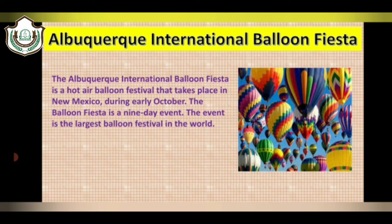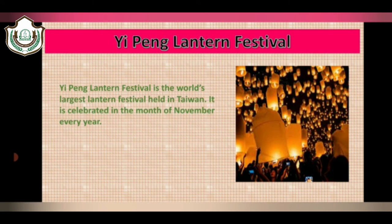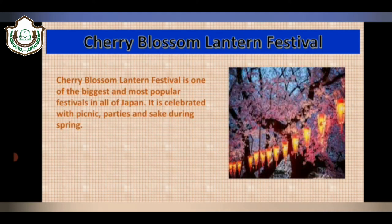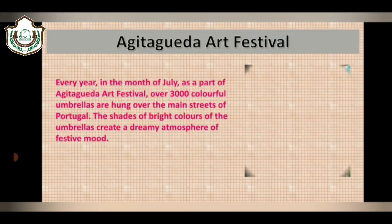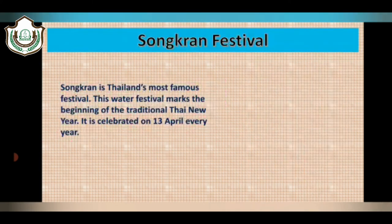Next is the Albuquerque International Balloon Fiesta. It is a hot air balloon festival that takes place in New Mexico during early October. The Balloon Fiesta is a nine-day event and is the largest balloon festival in the world. Then we have the Yipan Lantern Festival, which is the world's largest lantern festival held in Taiwan, celebrated in the month of November every year. Then we have the Cherry Blossom Festival, one of the biggest and most popular festivals in all of Japan, celebrated with picnics, parties and sake during spring. Then we have the Agitigut Art Festival. Every year in the month of July, over 3,000 colourful umbrellas are hung over the main street of Portugal, creating a dreamy festive atmosphere.